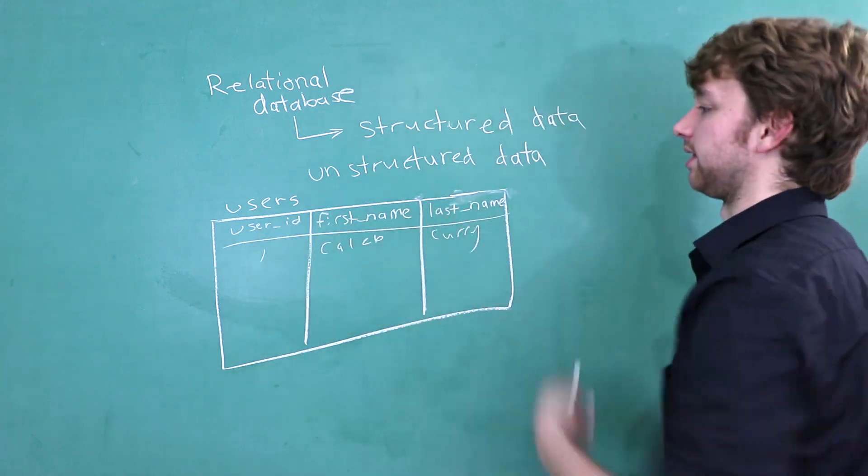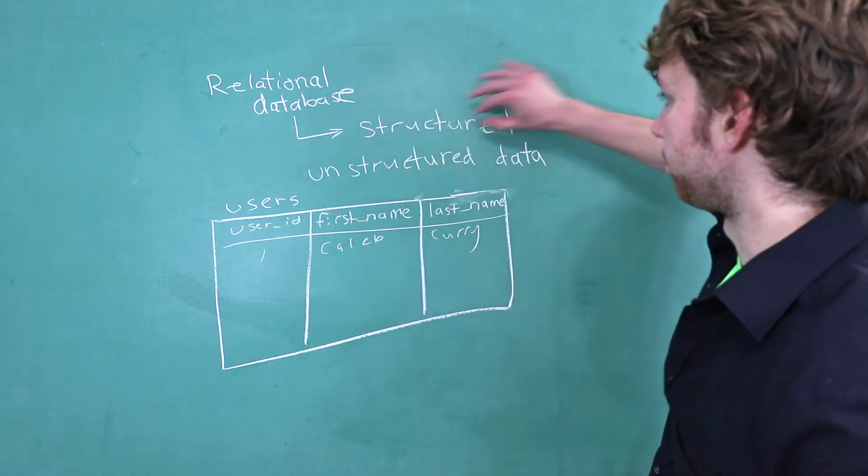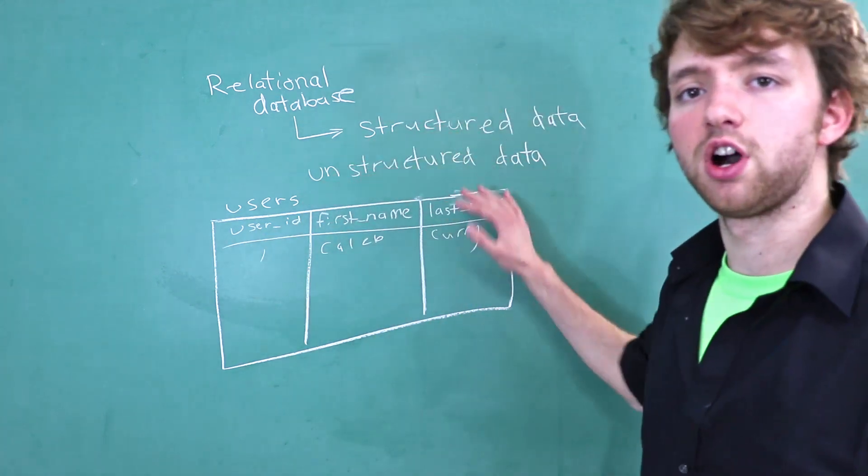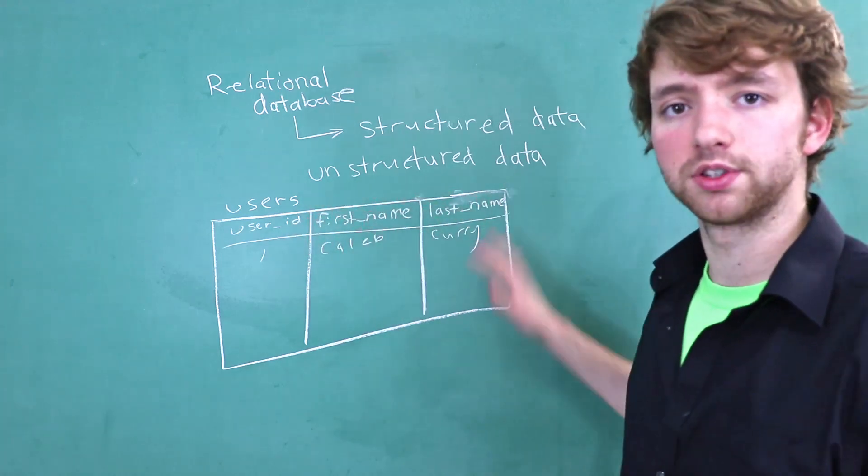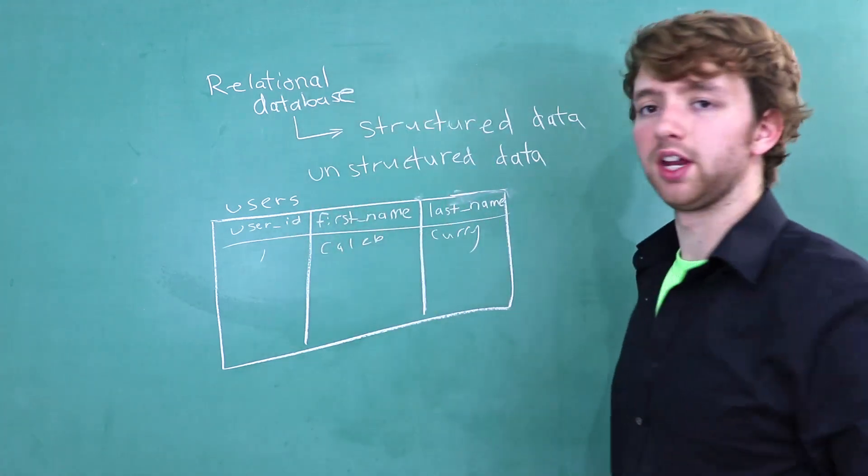So a user ID, first name, and last name. This is structured data. Unstructured data does not follow table rules.